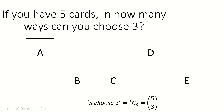We have two different ways of representing it: either 5C3, or as a vector with 5 on top and 3 on the bottom. This is just the number of different ways that I can select three cards from a pile of five, or whatever other objects you want.